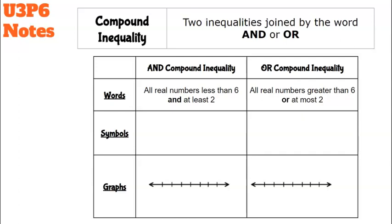Unit 3, Part 6 notes: compound inequality. A compound inequality is two inequalities joined by the word 'and' or 'or.' We're going to break down the difference between the two types of compound inequalities.